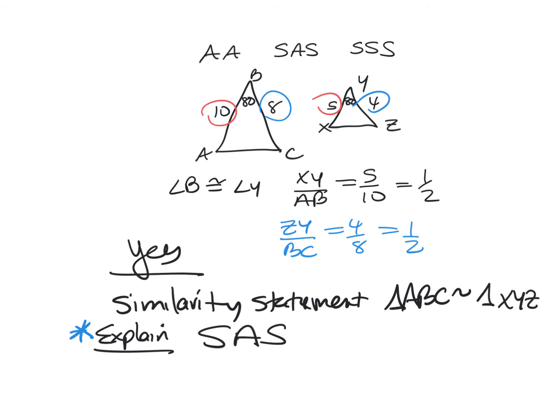When you took the quiz, we only knew one shortcut, and the reason would have been angle-angle. Now that we have three options — angle-angle, side-angle-side, and side-side-side — that's why I'm adding in the portion that says explain.